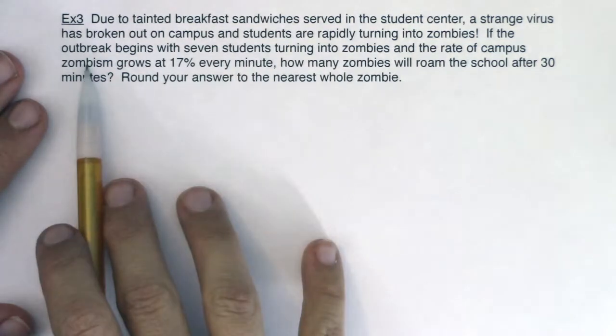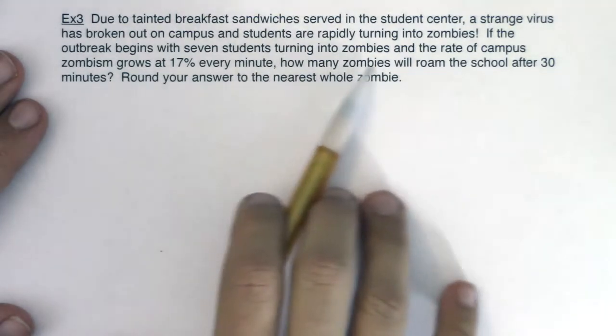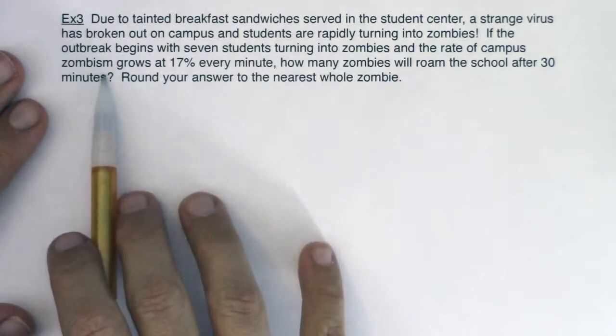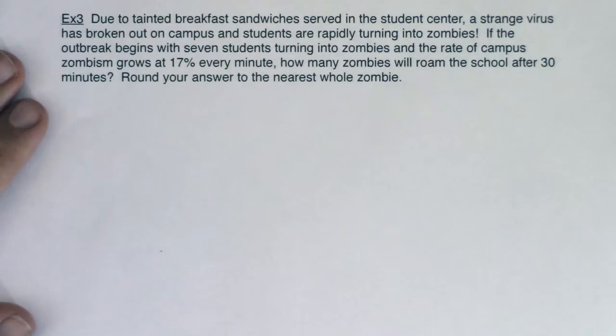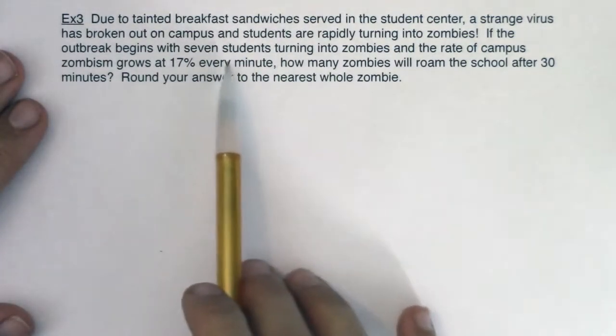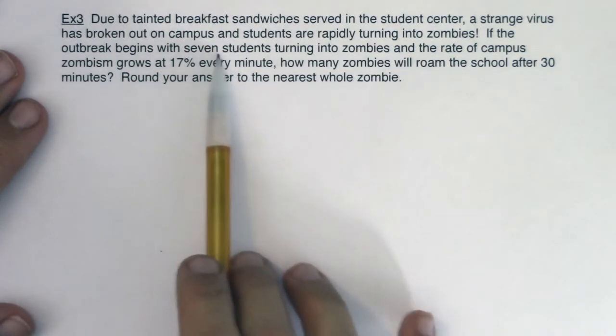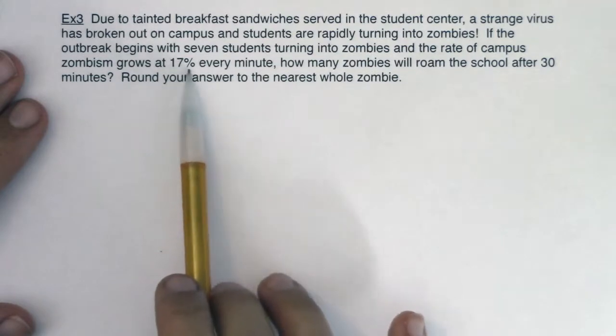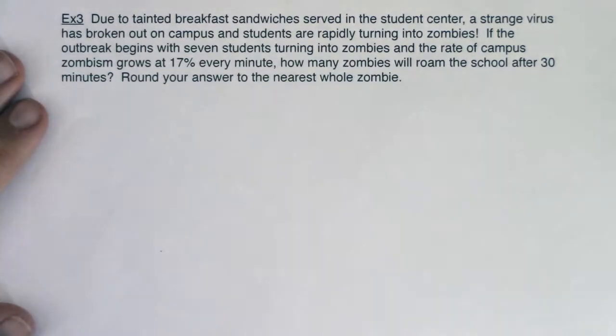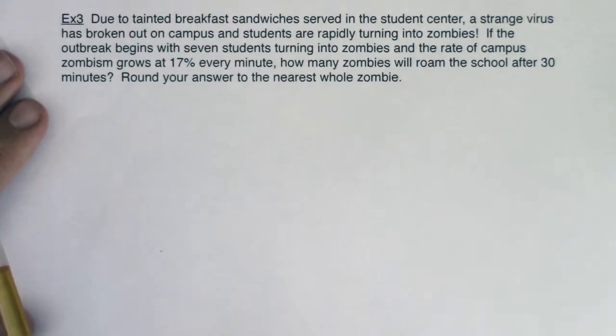If the outbreak begins with seven students turning into zombies and the rate of campus zombies grows at 17% every minute how many zombies will roam the school after 30 minutes? Round your answer to the nearest whole zombie. All right so let's take a step back. We've got some time that's occurring and we also have zombies. I initially started with seven zombies but we're growing 17% a minute.